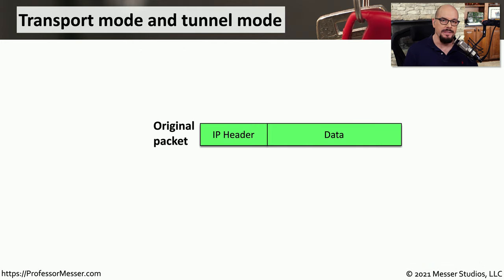There are two ways to send encrypted data over an IPSec tunnel: transport mode and tunnel mode. Take an original packet of information, which includes an IP header and the data that we need to protect. In transport mode, we take the IP header and put it in the front so we know where to send the information, then we encrypt the data and put an IPSec header and trailer around it. This doesn't protect everything in the packet, because the IP header remains in the clear and is sent across the network to the original IP addresses.